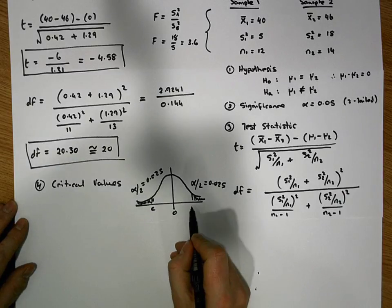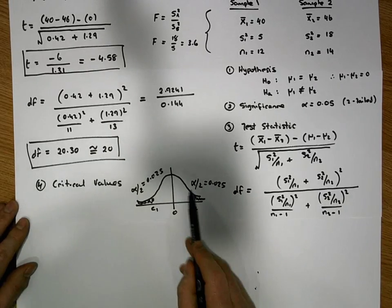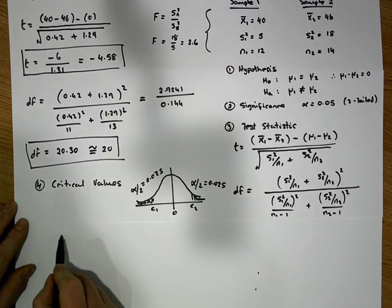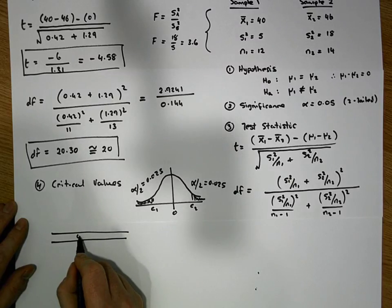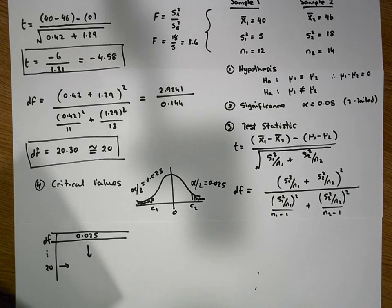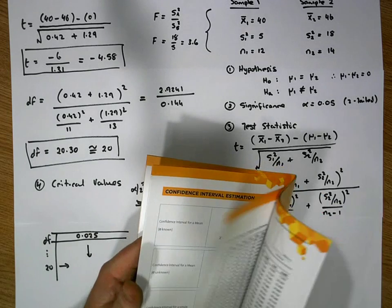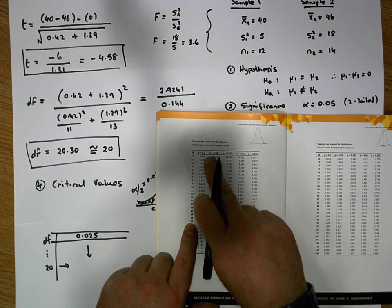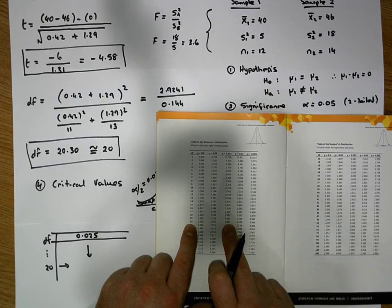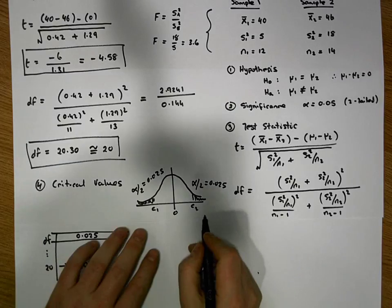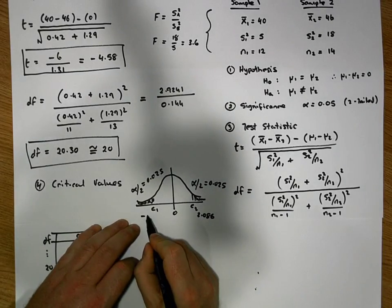We need to go to the t-distribution tables to find the critical values c1 and c2. The area in the right-hand tail is 0.025 and our degrees of freedom are 20. When we triangulate, the critical value is 2.086. So this value on the right is 2.086 and the value on the left is minus 2.086.